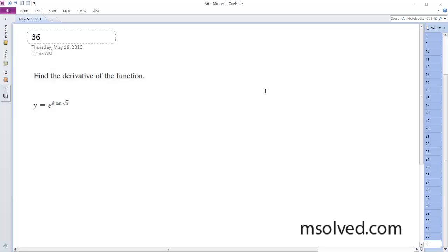Derivative of e raised to the k times tangent of the square root of x. Alright, so y prime is going to be equal to the derivative as you pull it down.